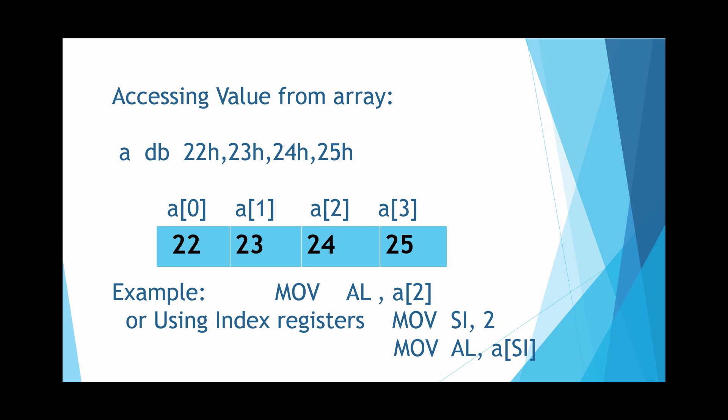For example, if you want to store any value from array A to the AL register, we can simply use this operation: MOV AL, A[2].